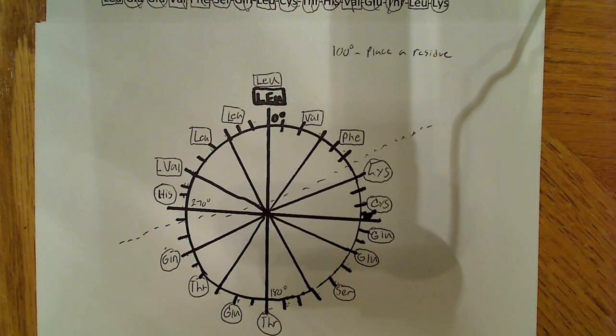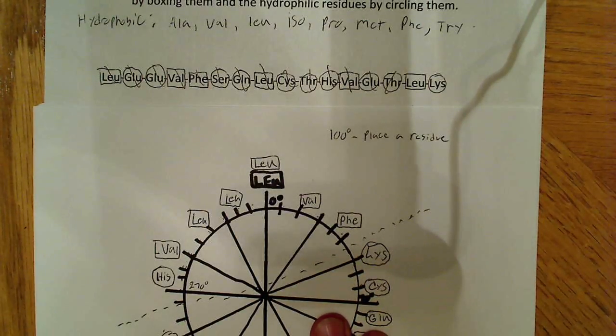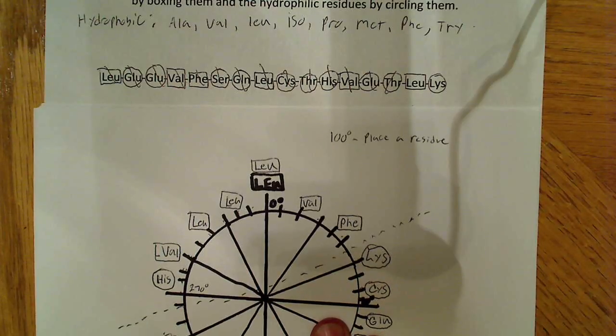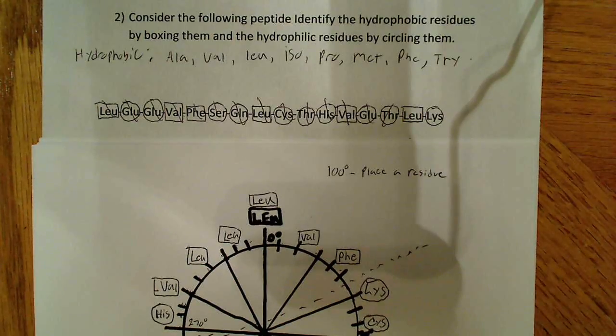So, basically, that's all you have to do to draw one of these helical wheels and put the residues around. Remember, it's 100 degrees apart. You just need to identify which ones are hydrophobic, which ones are hydrophilic. And, just remember your hydrophobic amino acids. And, that's about it for this video. So, thanks.